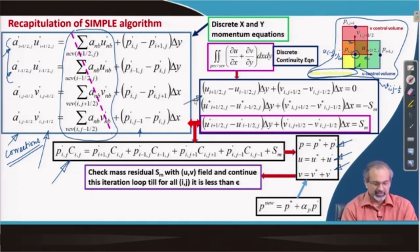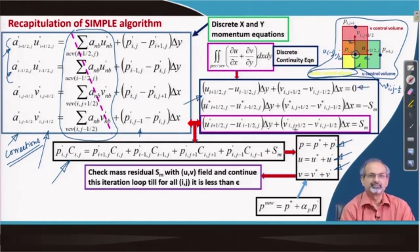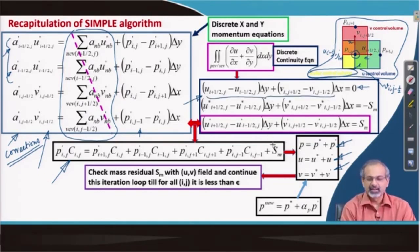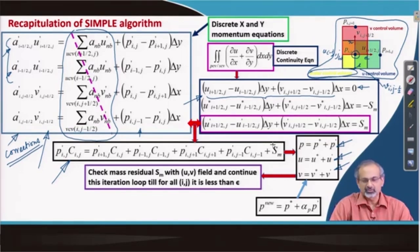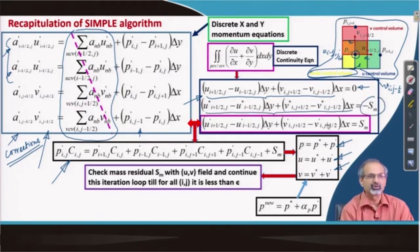The discrete continuity equation for a divergence-free velocity field yields 0 on the right-hand side — the velocity components on the 4 faces exactly satisfy div(v) = 0. However, you do not expect that with a guessed velocity field, and therefore when you have an estimated velocity field you get a source term on the right-hand side. Let us call it minus S_m, where m stands for mass, since we are handling mass conservation in the continuity equation.